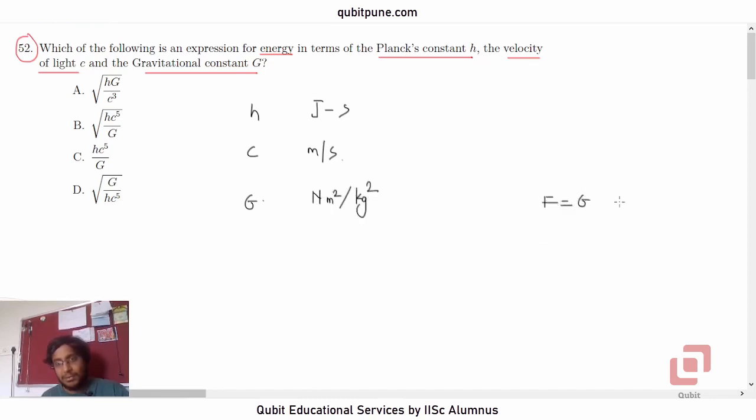Because it is f equals G m1 m2 r squared, so Newton meter squared upon kg squared, yes, Newton meter squared upon kg squared.